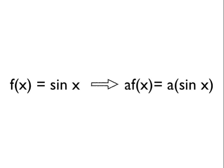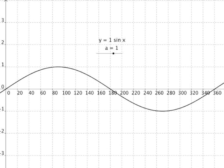Let's have a look at our second function of x now, which is sine x. We're going to look at the transformation a times f of x, which for our function will be a times sine x. Here's the graph of y equals sine x. If we change the value of a — the value we're multiplying sine x by — let's see what happens.